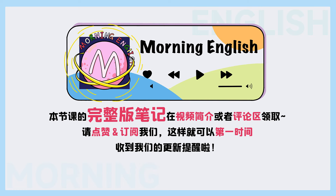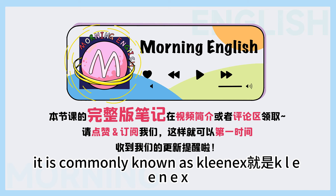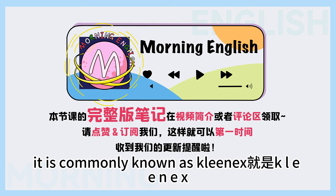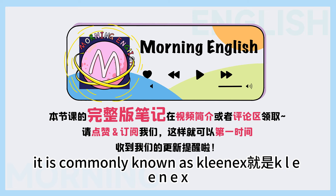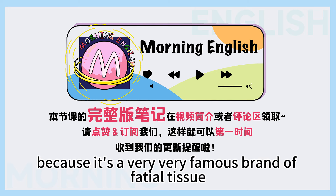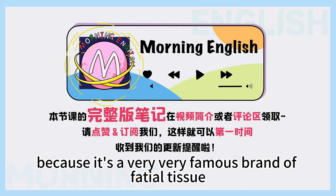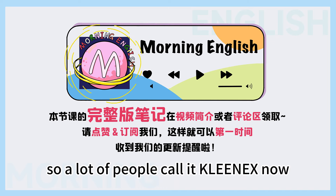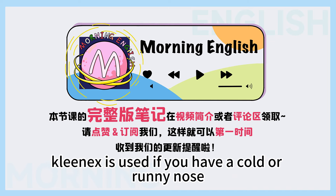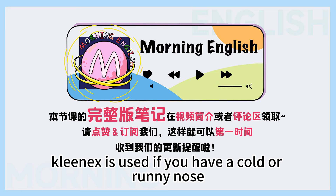So the first type of tissue we use is facial tissue, 也就是说面精致。It is commonly known as Kleenex — K-L-E-E-N-E-X — because it's a very famous brand of facial tissue. So a lot of people call it Kleenex.